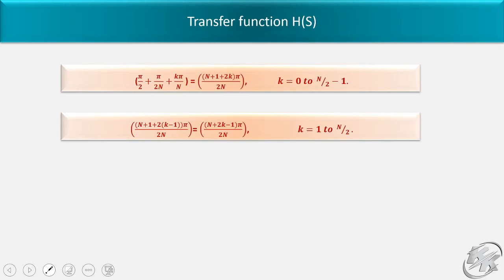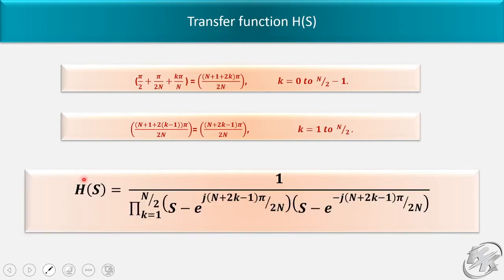Now simplifying the formula π/2 + π/(2n) + kπ/n: taking π as common and 2n as LCM, we get (n + 1 + 2k)π / (2n), where k ranges from 0 to n/2 minus 1. Changing the variable by replacing k with k-1 so k ranges from 1 to n/2, the formula becomes (n + 2k - 1)π / (2n). So our transfer function H(s) is derived from pole locations at e^(j(n+2k-1)π/(2n)), where k ranges from 1 to n/2.